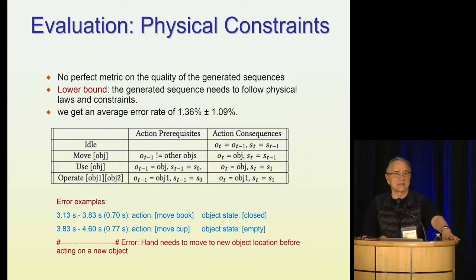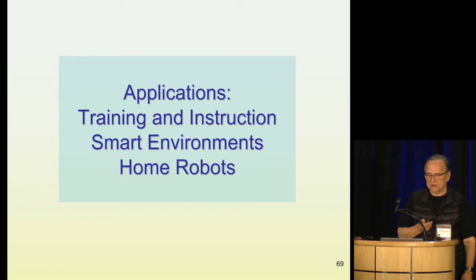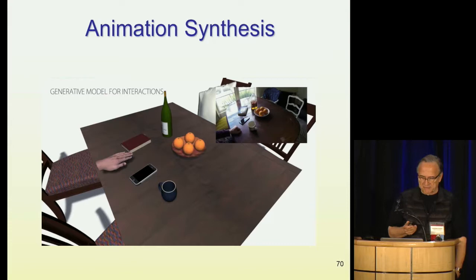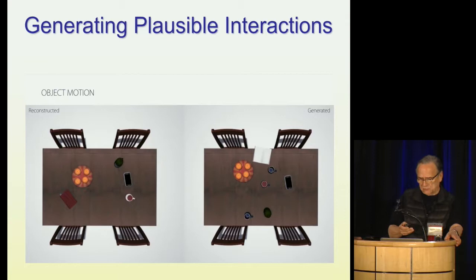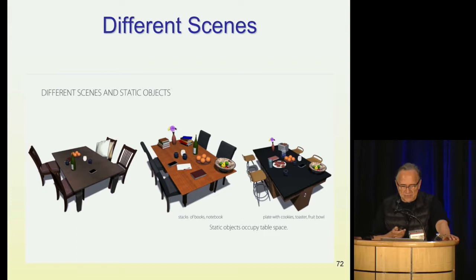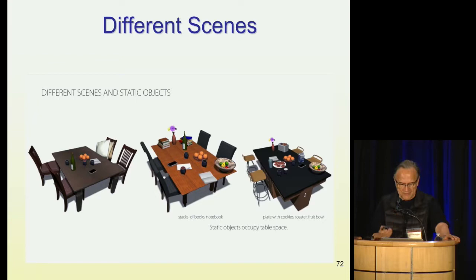Let me show some applications for training, instruction, smart environments, and home robots. You can construct and also generate essentially the same actions but in a different environment — even moved to different scenes. The network is able to understand that other objects are present and must be avoided, with no collisions. You can also show different continuations of the same interaction — how the future might evolve given a partial video that you start with.